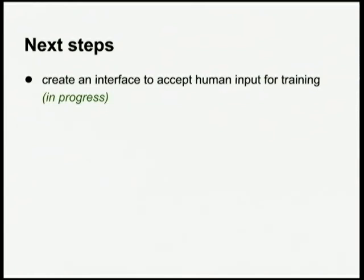We showed you the demo and it worked. The next immediate step is — right now we have a working system with a canonical training set — we need to come up with a simple way for a human to say yes or no to a set of duplicates that are put in front of them.